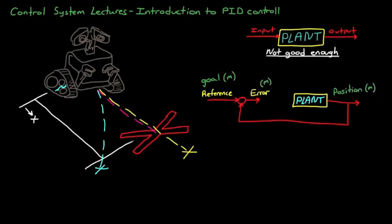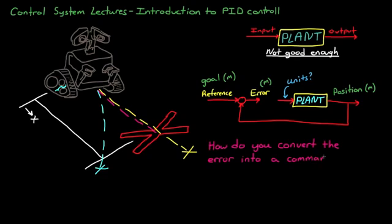So at this point we need to figure out how to convert an error signal that has units the same as the output of the plant into an input signal that has units that may or may not be the same as the output. And in addition to just changing the units, the error needs to be adjusted in such a way that the input into the robot causes it to eventually reach the red X.